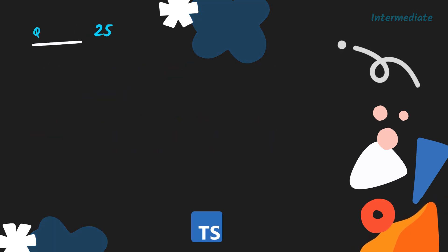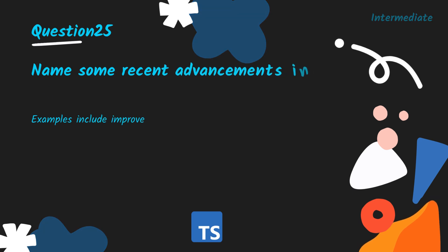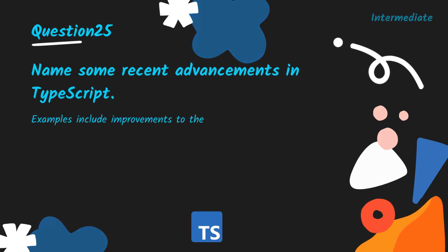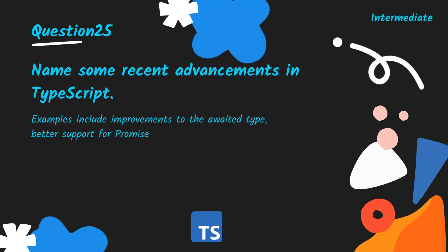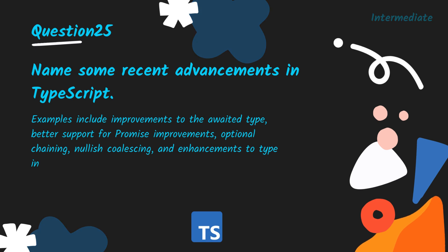Name some recent advancements in TypeScript. Examples include improvements to the awaited type, better support for promise improvements, optional chaining, nullish coalescing, and enhancements to type inference and checking.